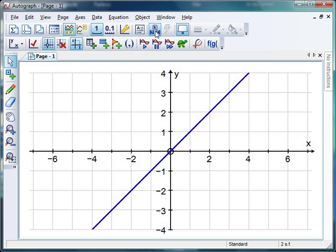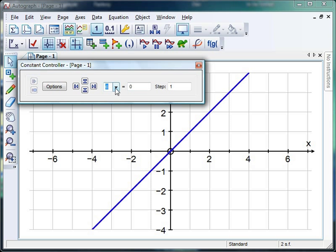Right OK let's get the constant controller on the go. Now what we can do here is get the students to predict what's going to happen when the value of c increases and the value of c decreases. I can use the right left buttons to change the step size so if I want it a bit more accurate, I've got my little 0.1's on the go there. And if I use the drop down menu I can do the same with the value of m and increase it and decrease it.